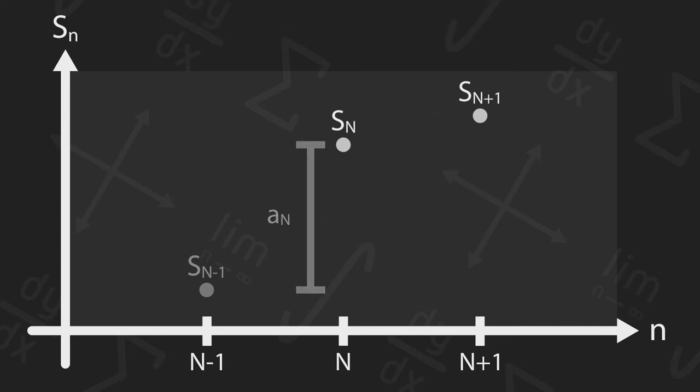So, S sub n plus 1 must be below S sub n. What if we were to place it all the way below the partial sum of our previous term? Then, at that point, the distance between the two sequential partial sums, which we've defined to be A sub n plus 1, would be greater than the previous distance between sums.